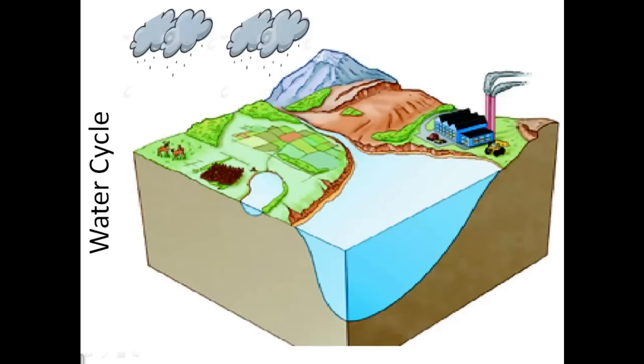First, we have the water cycle. Water can move between the water and atmosphere and land. Water leaves the clouds and can return to the land or water through what we call precipitation: rain, sleet, snow, or hail.